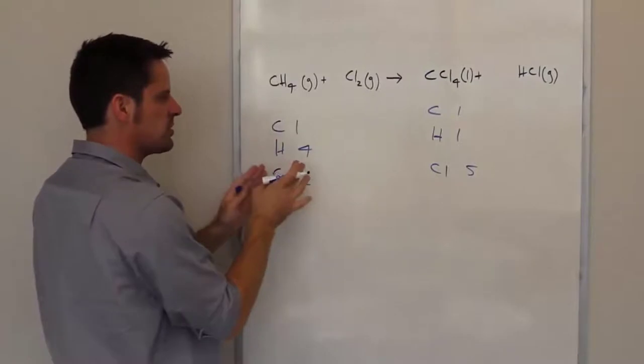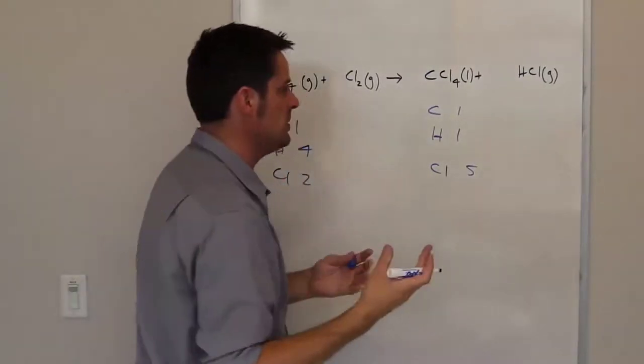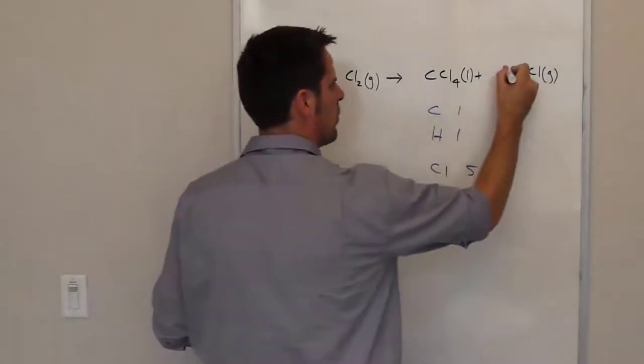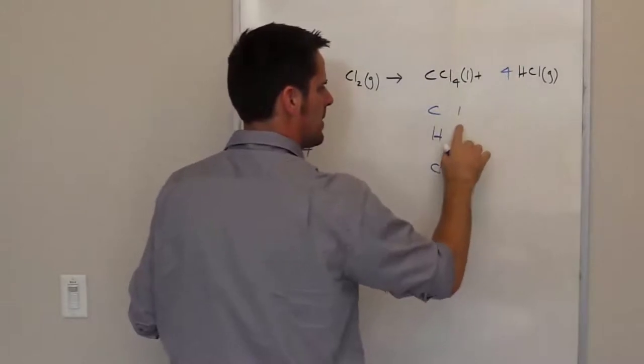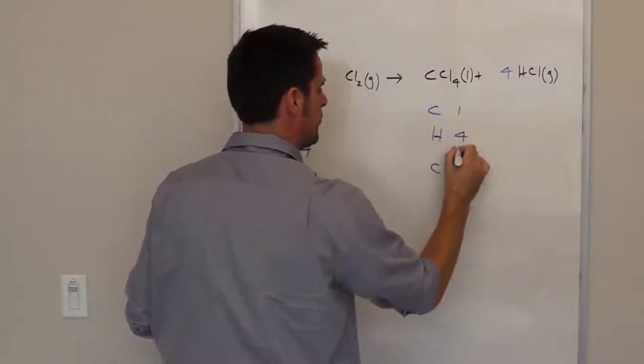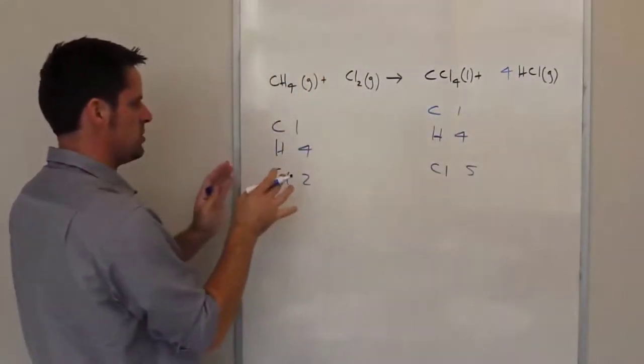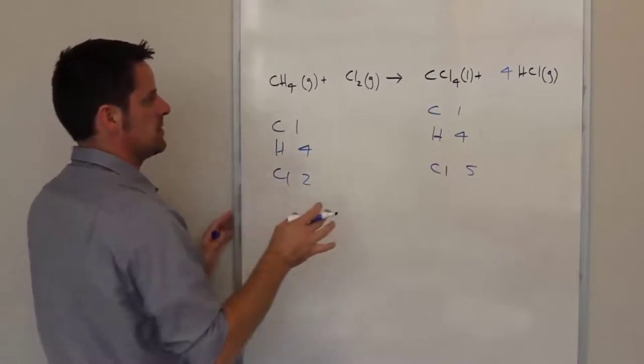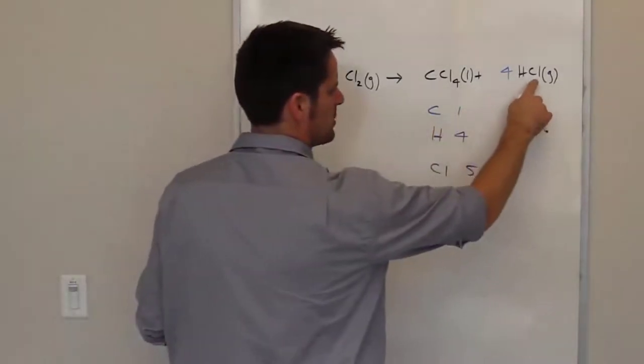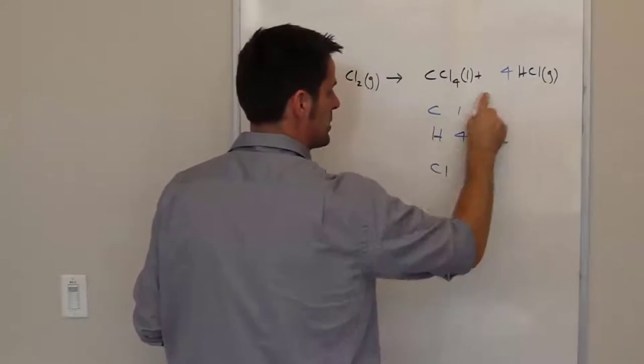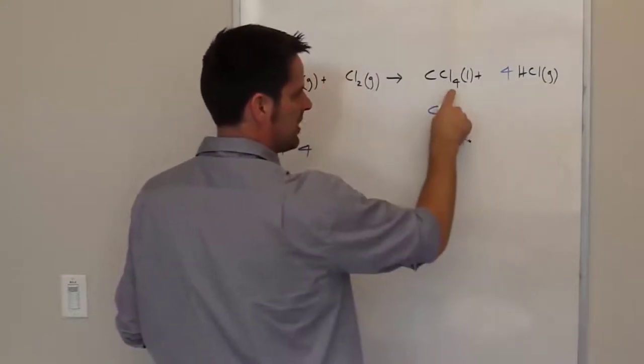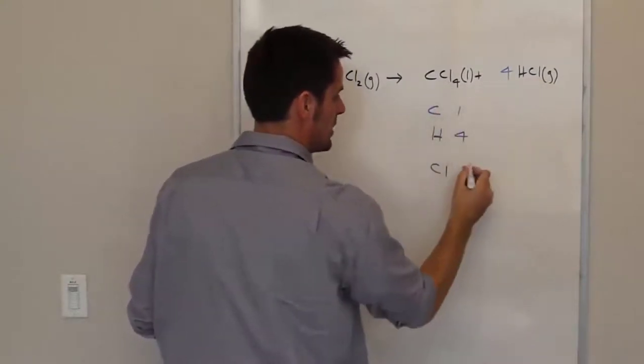My carbons are balanced, my hydrogens are not. I could put a four right there, and now that changes the number of hydrogens to be four. My hydrogens now match. But what about my chlorine atoms? That four also changes the number of chlorines because it multiplies here. So now I've got four chlorines plus four chlorines, which comes to eight chlorine atoms on the right.